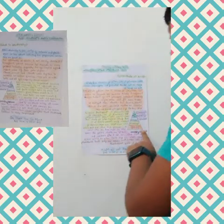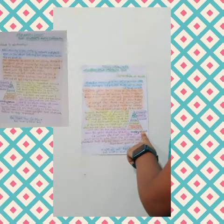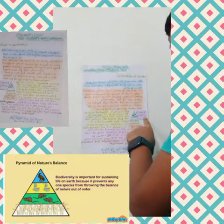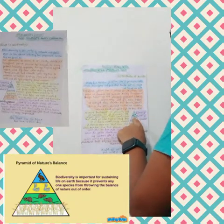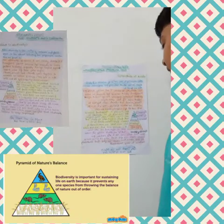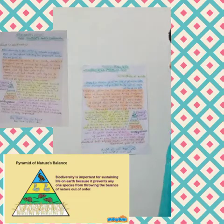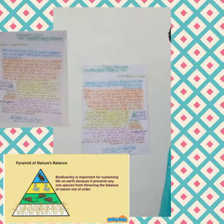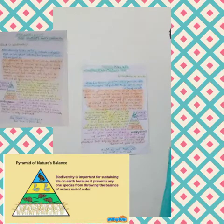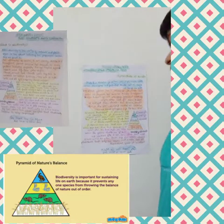Here I have made a table of the pyramid of nature balance. In that, at the top it comes Carnivores. Second, Carnivores. Third, Herbivores. And fourth, crops or producers.